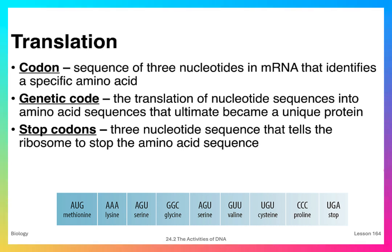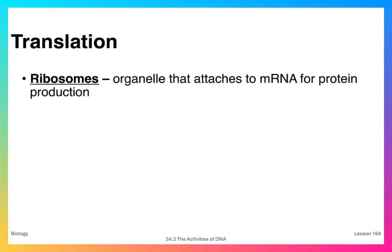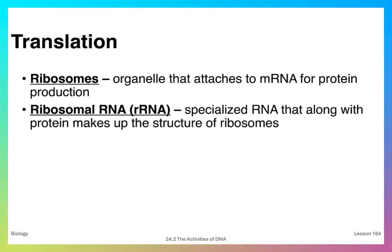At the end of the production of a particular protein molecule is something known as a stop codon, which is a three-nucleotide sequence that tells the ribosome to stop and clip off the protein. Similarly, there's a start codon, which tells the ribosome to connect and begin the process of amino acid sequencing. Ribosomes are the organelles responsible for protein production, and there is specific RNA that, along with proteins, makes up the structure of the ribosome.